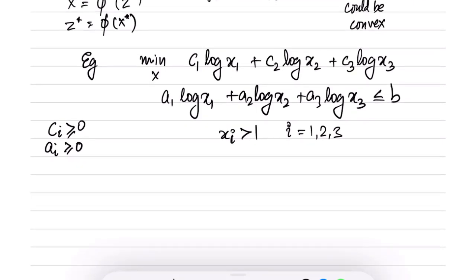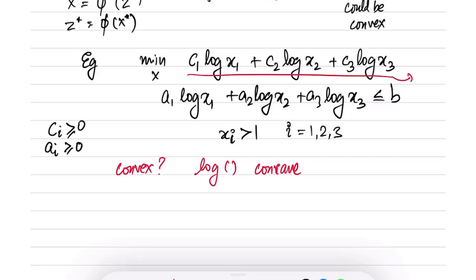Is this problem convex? Remember that log is a concave function. Therefore the objective here is concave. Likewise, the inequality constraint is of the form concave function ≤ 0, not convex function ≤ 0. Therefore this problem is not convex: the objective is concave instead of convex, and the inequalities do not involve convex functions.